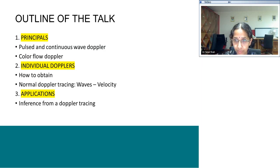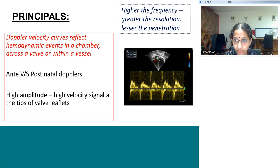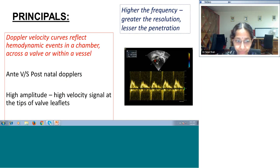For example, with a 12S probe your resolution is beautiful but your penetration is very little. Juggle with the probes when you start from subcostal and then proceed up. The Dopplers are done at the tips of the leaflets of the valves. As you can see in the figure, the cursor is put at the tip of the leaflet. You will get the highest amplitude and velocity signal at the tip of the leaflets.